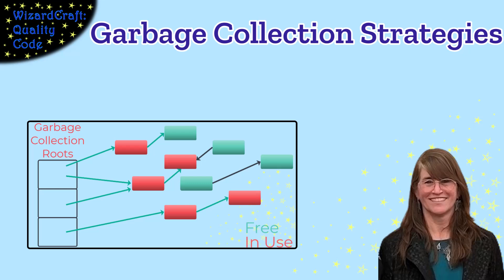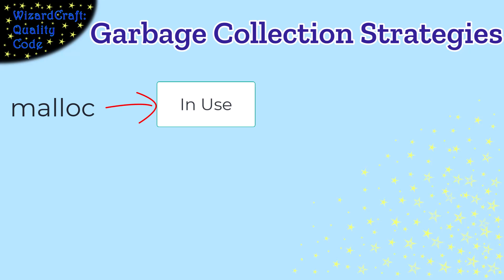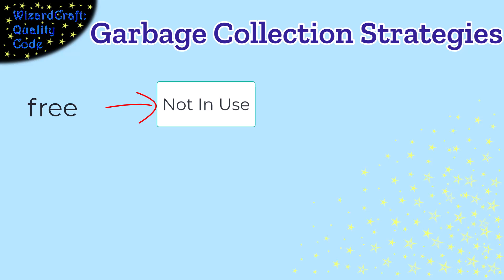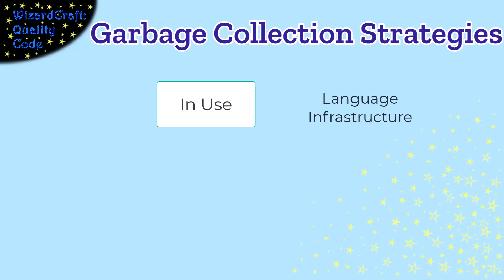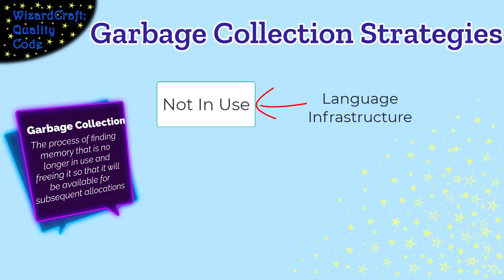Any language that lets you allocate memory with new, malloc, or something like that has to provide infrastructure that knows which memory is free to be allocated when you want it. This video is about how languages provide that capability. In some languages, the programmer explicitly allocates and explicitly frees the memory. In others, the programmer explicitly does the allocation, but the language infrastructure infers when the program is no longer using memory and frees it. That process of figuring out what is no longer in use and freeing it is called garbage collection.